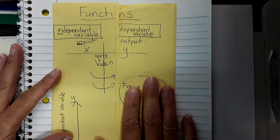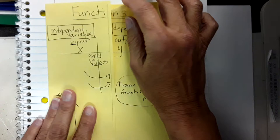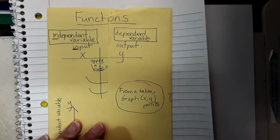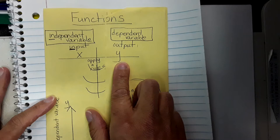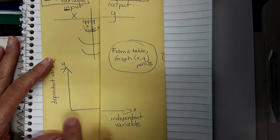With functions, what we do is put values into an input-output table. Your input is your x-axis, and your output is what's represented on your y-axis. So if I'm looking at a graph, my input is always going to be on the x-axis and my output is always going to be on the y-axis.